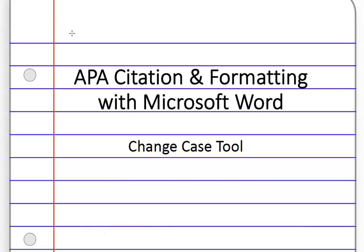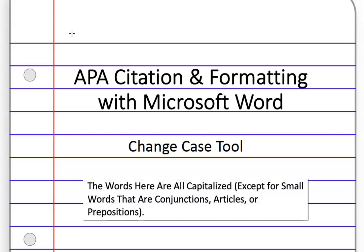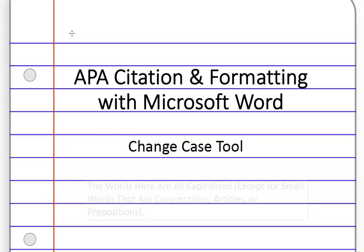The journal name of a source should have all words capitalized, except for prepositions, conjunctions, and articles with three letters or fewer.